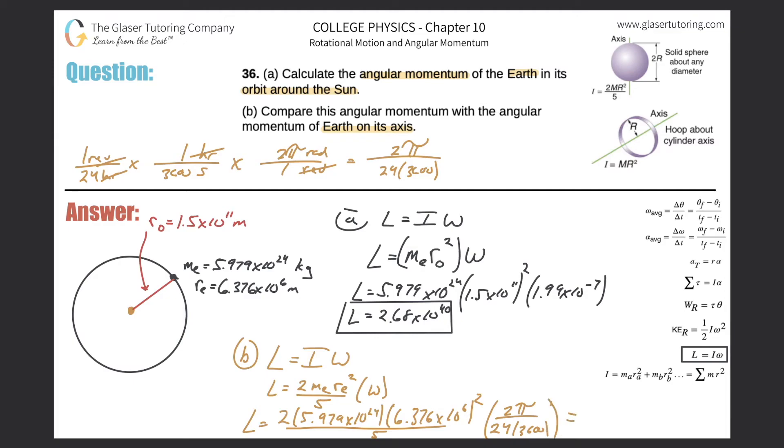Let's plug it into the calculator. 2 times 5.979 times 10 to the 24th times 6.376 times 10 to the 6th squared, divide that by 5, then multiply it by 2 pi all divided by 24 times 3,600. And we get a value of about 7.07 times 10 to the 33rd. So that takes care of that.